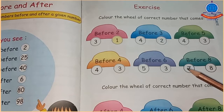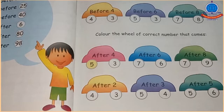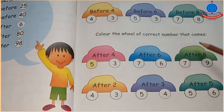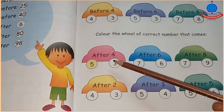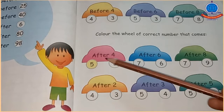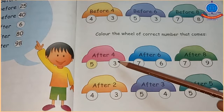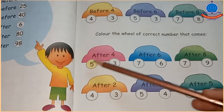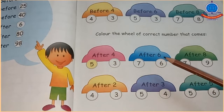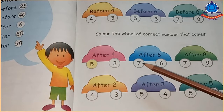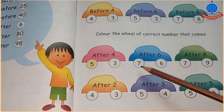ज़रूरी नहीं है कि आप एक ही color करें, आप different colors भी use कर सकते हैं। इसी तरह से आप after के circles में भी color करेंगे — color the wheel of the correct number that comes after. After 4 — 4 के बाद 5 या 3? 5 आता है, इसलिए 5 के circle में color किया गया है। After 6 — 6 के बाद 7 आता है, 7 के circle में color करेंगे।